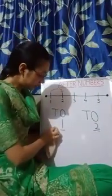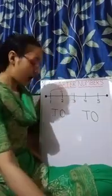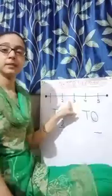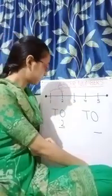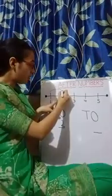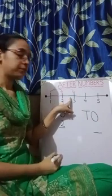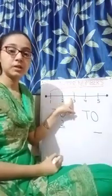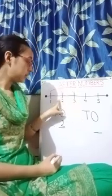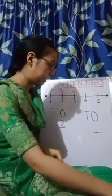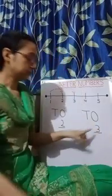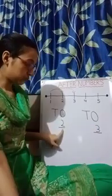Now let us find the number that comes after 2. Now let us find from the number line which number comes after 2. This is the number 2, and now if we move a step forward, which number did we reach? We reached the number 3. So that means the number that comes after 2 is 3. Now let us write the number 3 in the blank. The number that comes after 2 is 3.